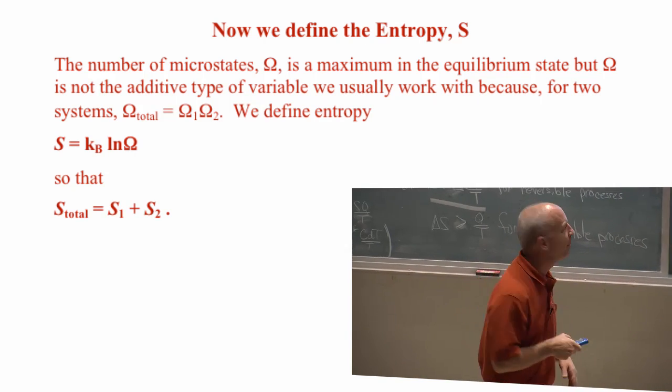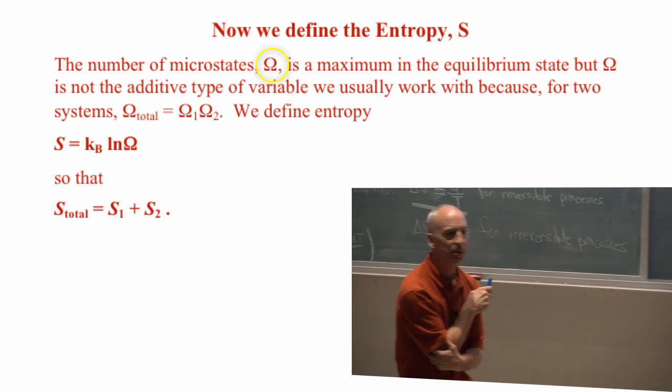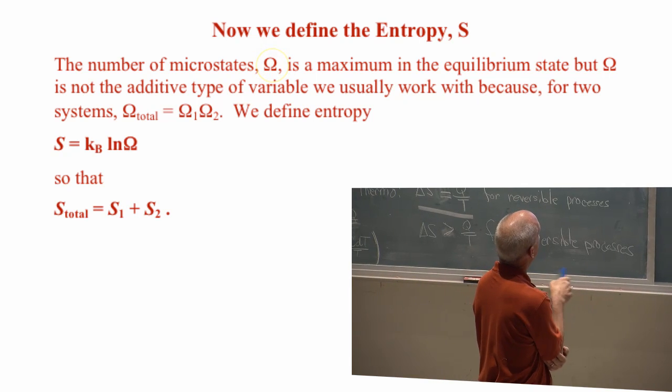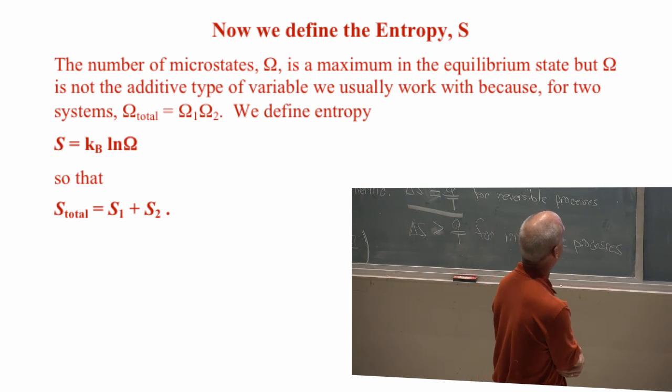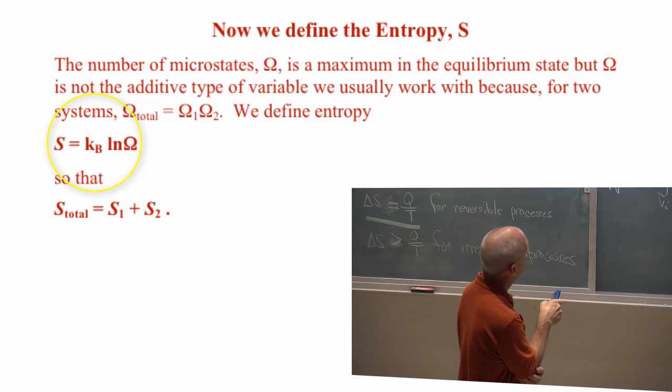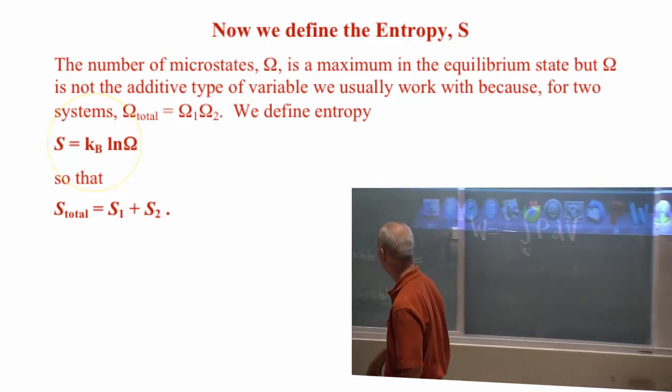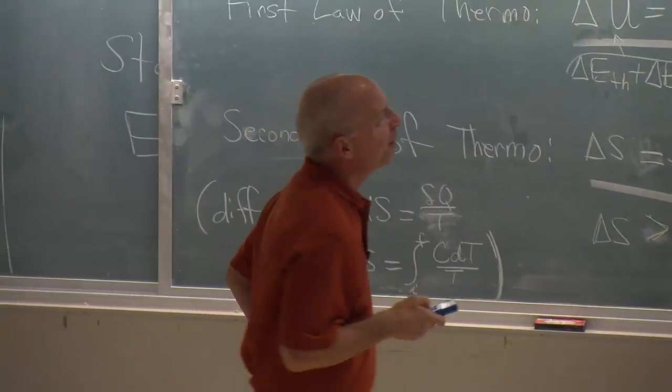Entropy tells us about equilibrium because omega, the number of microstates, tells us about equilibrium. Number of microstates tells us what's most likely, and so it tells us something about equilibrium. And so entropy also tells us something about equilibrium. Entropy is just a constant times the natural log of the number of microstates. I wrote this down, so I'm going to leave that right there for right now.